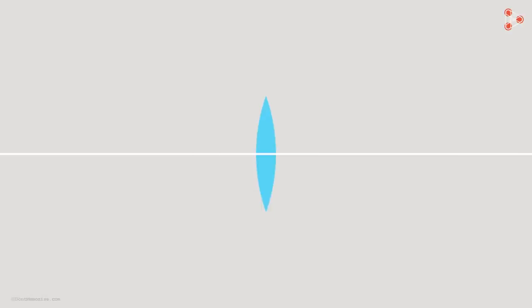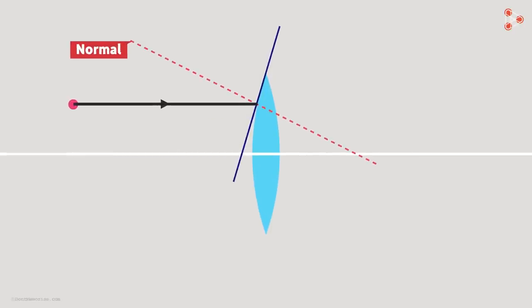Consider a convex lens and suppose a ray of light is incident onto it at an angle. This is the normal at the point where the light ray is incident. Now consider a point object here from where this ray is emerging. What will happen when it enters the lens? This ray is traveling from one medium to another at an angle, so after entering the lens its speed will change, which will result in its bending.